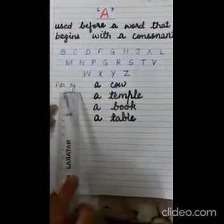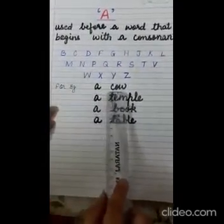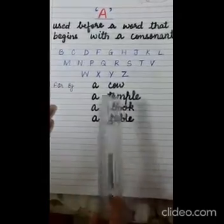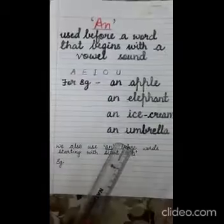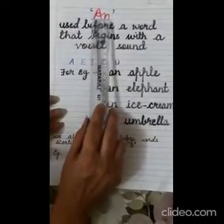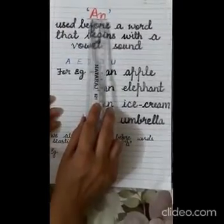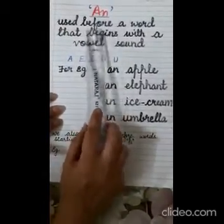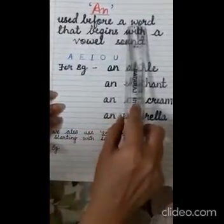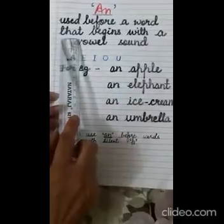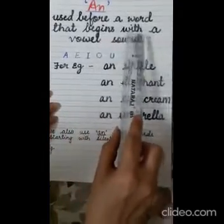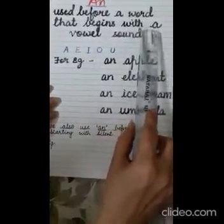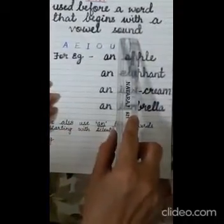For example: a cow, a temple, a book. And now children, we use article AN before a word that begins with a vowel sound.